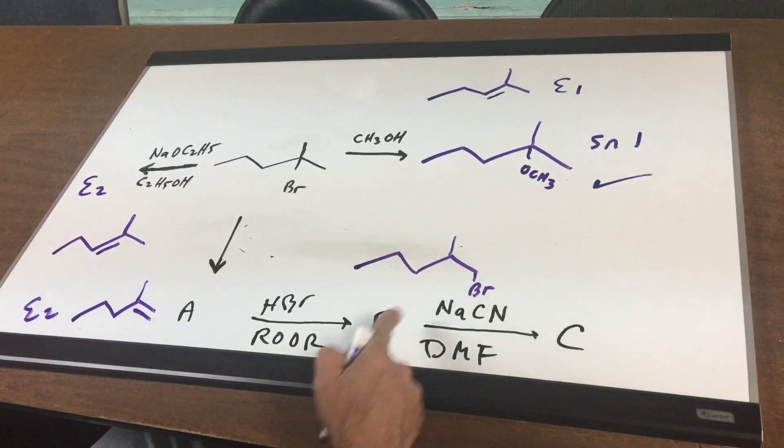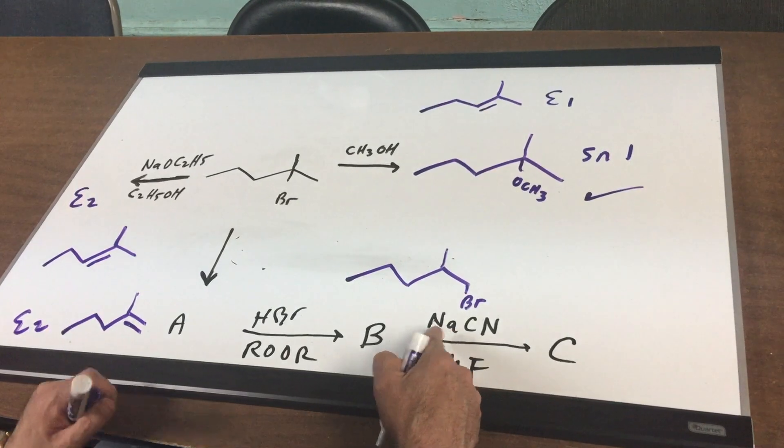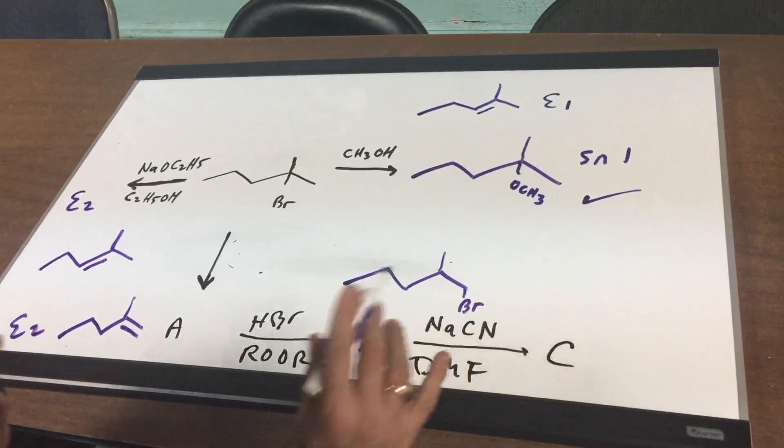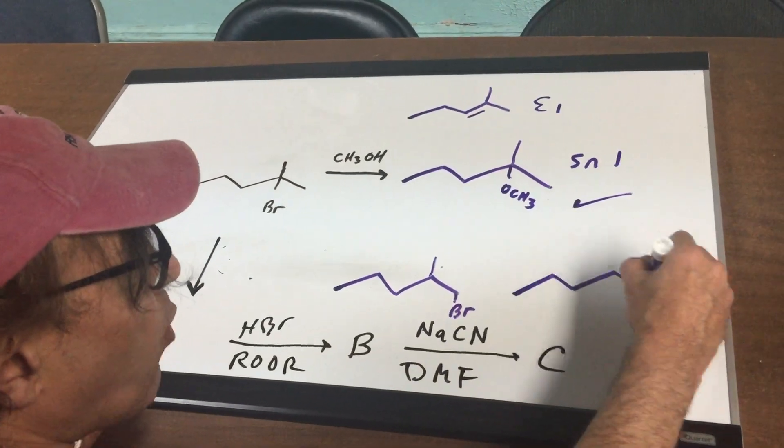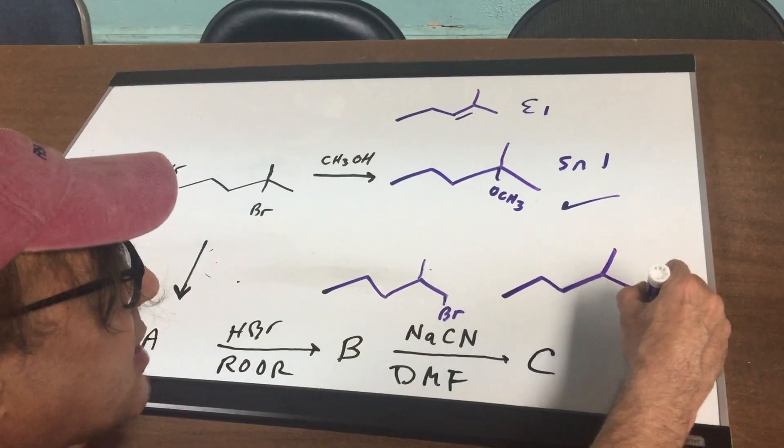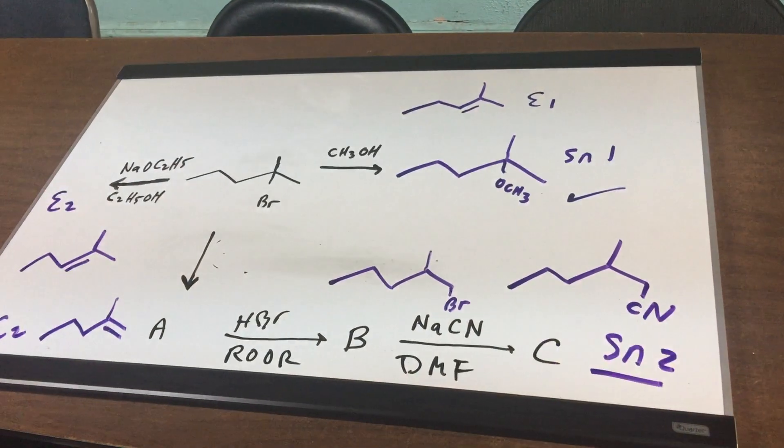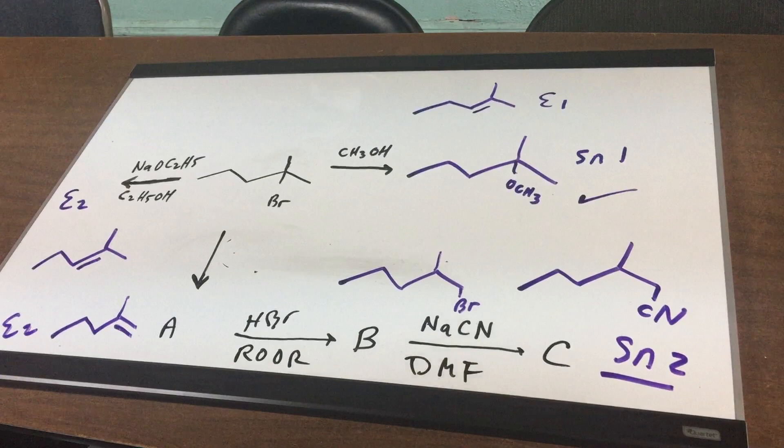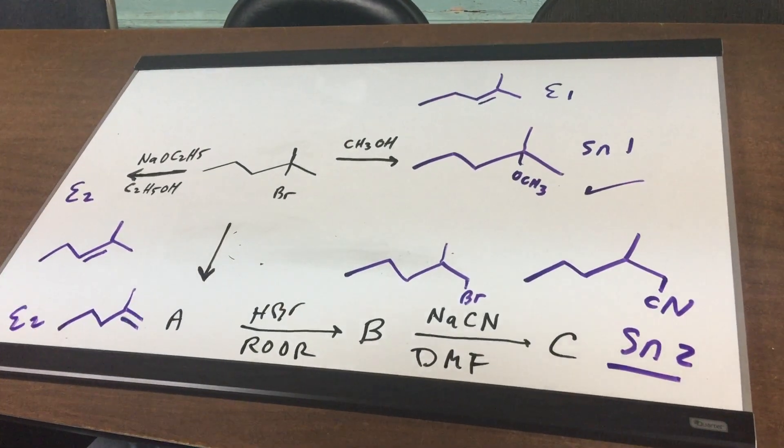And finally, this is a primary halide. And if it's a primary halide with cyanide, cyanide loves to do the SN2 reaction. So what I'm going to do is replace this with a cyanide, and you would get SN2. You might get a little competition from the E2 on this, but I'm going to keep life simple and just call it SN2.